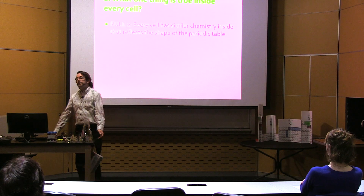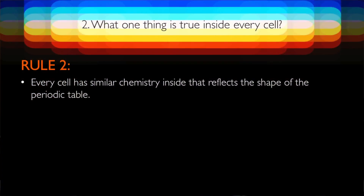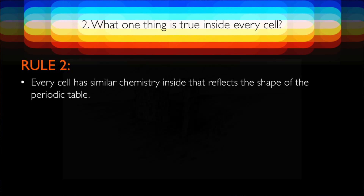The question that Rule 2 answers: what one thing is true inside every cell? The thing that you see, if you look inside every cell, is similar chemistry inside. And that chemistry reflects the shape of the periodic table that you have in front of you.